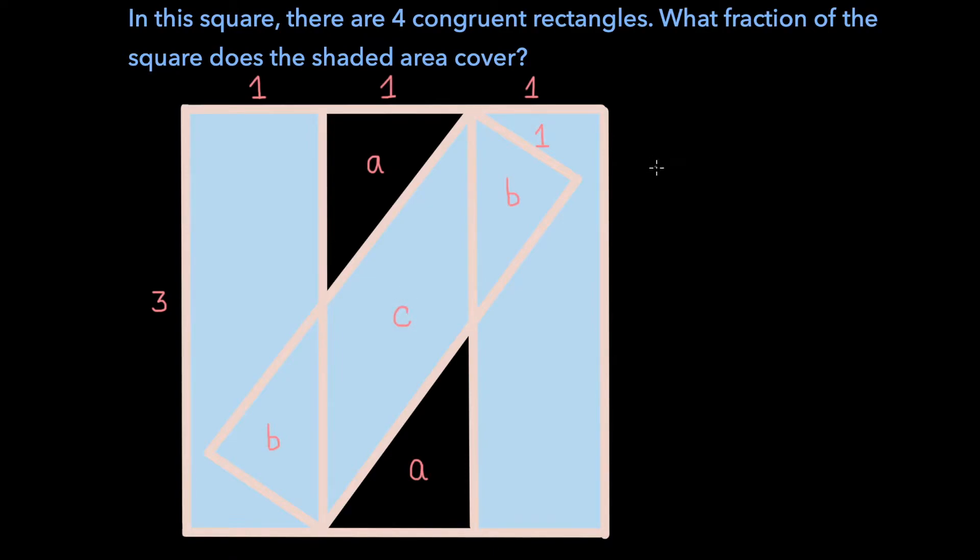then notice that C plus 2A must equal C plus 2B. And this is because the rectangle in the middle and the slanted rectangle are congruent, and so their areas must be the same.